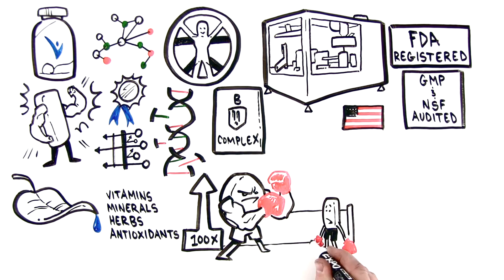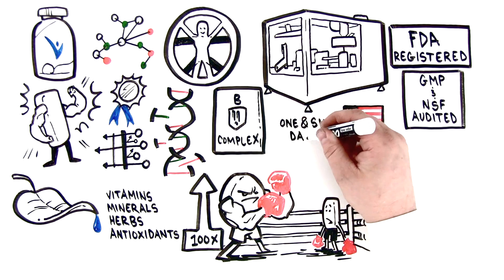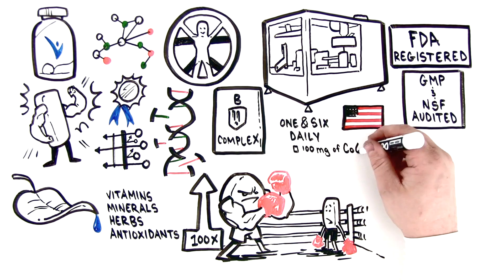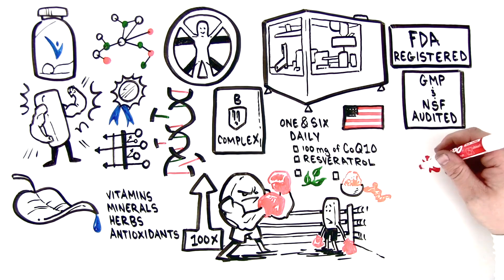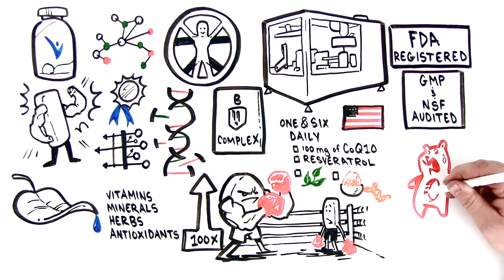Using the inferior and poorly absorbed cyanide form of B12. 1 in 6 Daily also includes 100 mg of CoQ10, resveratrol, standardized green tea, and turmeric, amazing nutrients missing entirely from most other multis.